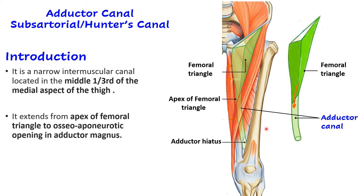Let us see its extent. Above, it is continuous with the femoral triangle at the apex of the femoral triangle — that is its upper extent. The lower extent is the hiatus or opening in the adductor magnus muscle. Adductor magnus is inserted onto the posterior aspect of the femur, and there are openings there — the last and largest is the fifth opening, which marks the lower extent of the adductor canal.